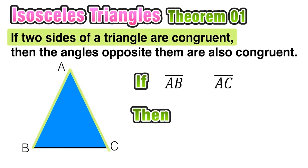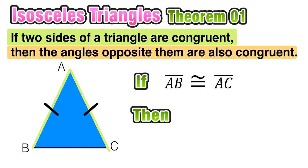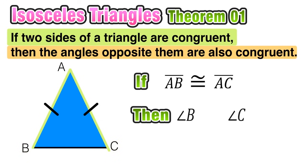The first part of this theorem says that if side AB is congruent to side AC, then the angles opposite of those sides are also congruent to each other. If we start at those two congruent sides and go opposite or across from them, we arrive at angles B and C. According to this theorem, angle B would be congruent to angle C, since they are opposite sides that are congruent to each other.